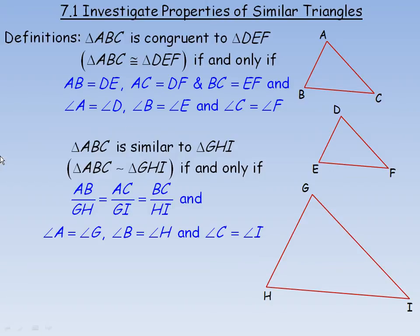Not only are all the sides correspondingly equal, but the angles are as well. Angle A would be equal to angle D, angle B would equal angle E, and angle C would equal angle F. That's the property of congruent triangles.